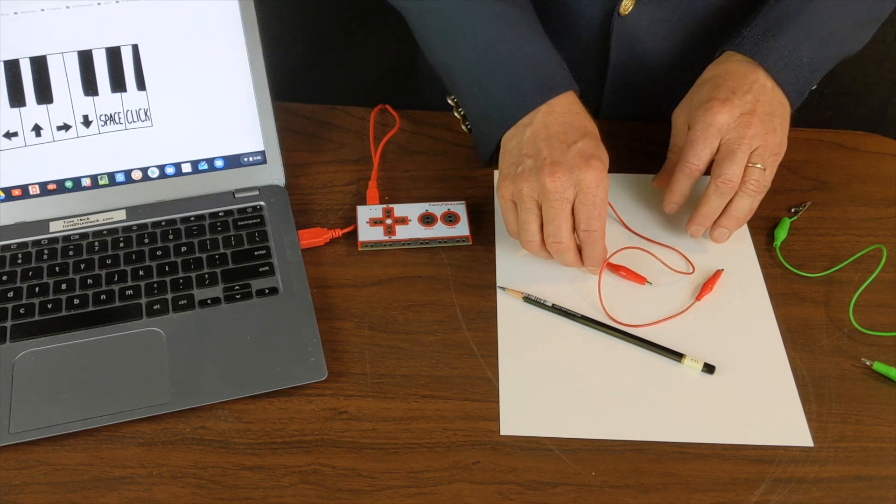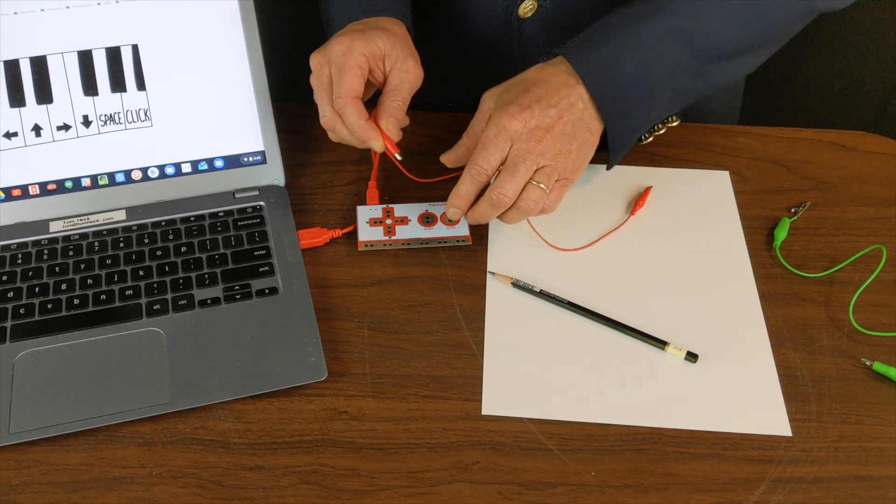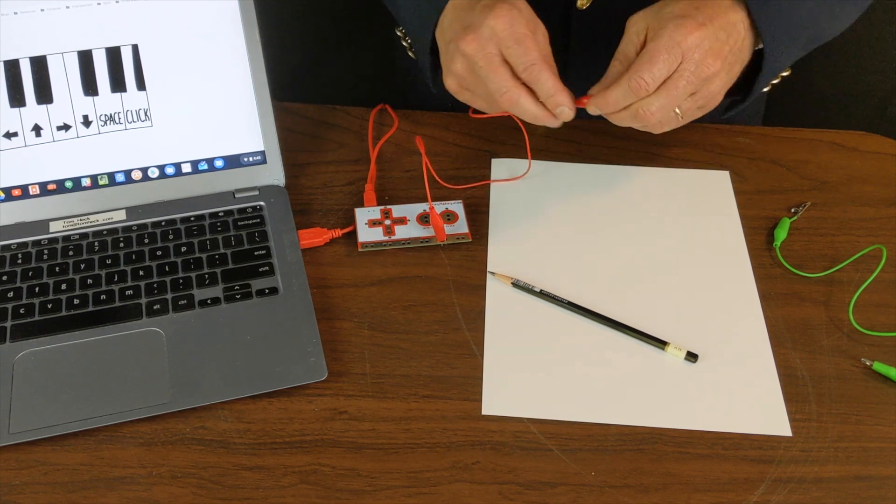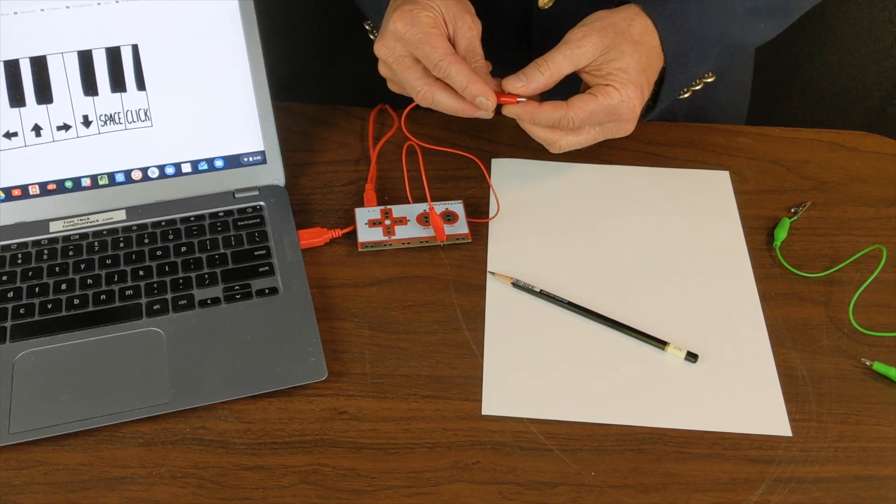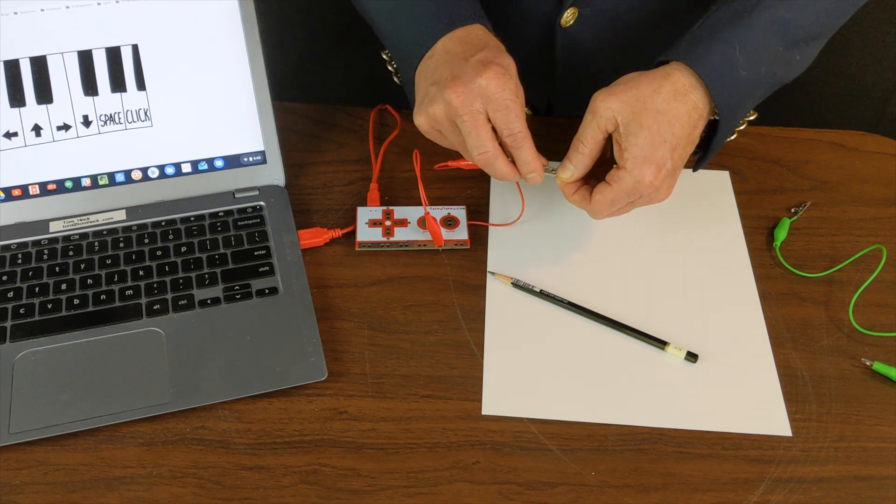Now, to make my drawing, I'm going to first connect an alligator clip to earth. And to make it easier to connect to the paper, I'm going to pull off the vinyl covering. There we go.